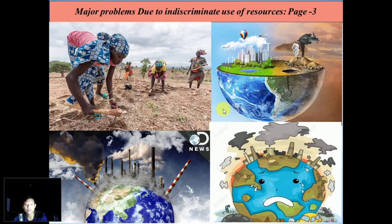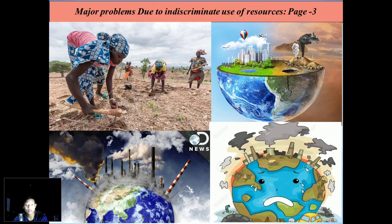Next, we'll see major problems due to indiscriminate use of resources. Indiscriminate use means action done without thought of the results, or random use of resources. First, depletion of resources — our resources will be depleted if not used wisely. Second, accumulation of resources in few hands, which will divide society into two segments: the haves and the have-nots.